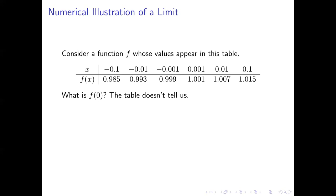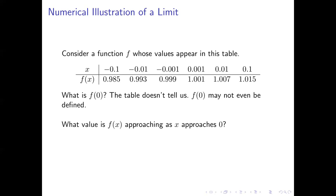Of course, the table does not tell us what f of zero is. Zero does not appear among the x values listed in the top row. In fact, we can't even be sure that f of zero has a value — it might be undefined. We don't know. But we can ask a slightly different question: what value is f of x approaching as x approaches zero?